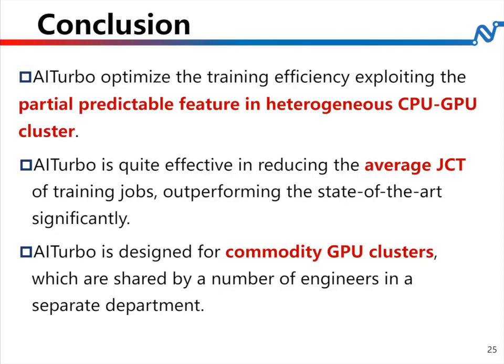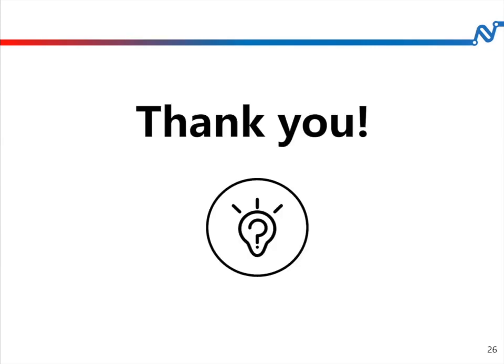In summary, we present AI Turbo. It optimizes training efficiency by exploiting the partial predictable feature in heterogeneous CPU and GPU clusters. It is quite effective in reducing the average job completion time of training jobs, outperforming the state-of-the-art significantly. It is designed for committed GPU clusters shared by engineers across separate departments. Thank you. Any questions?